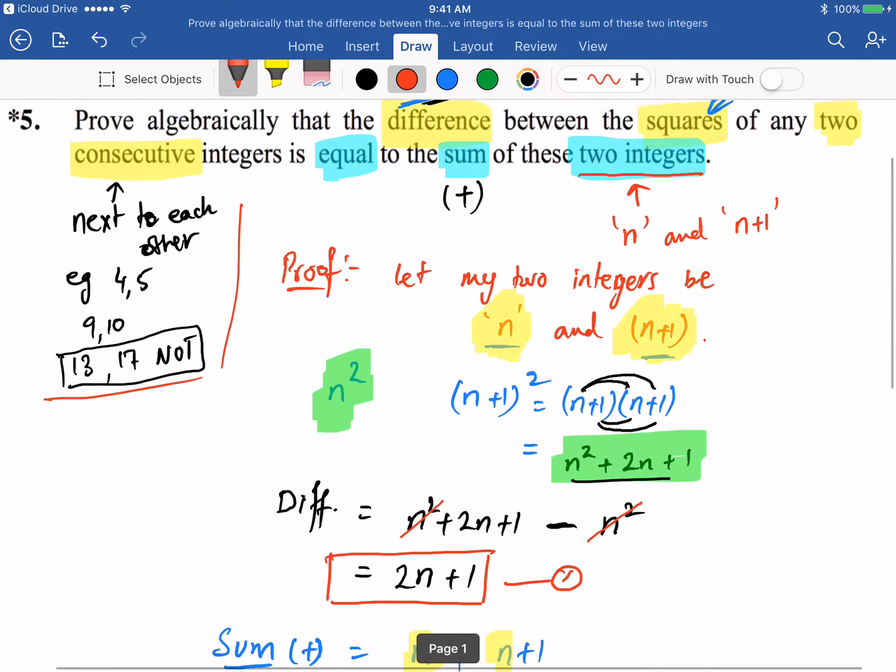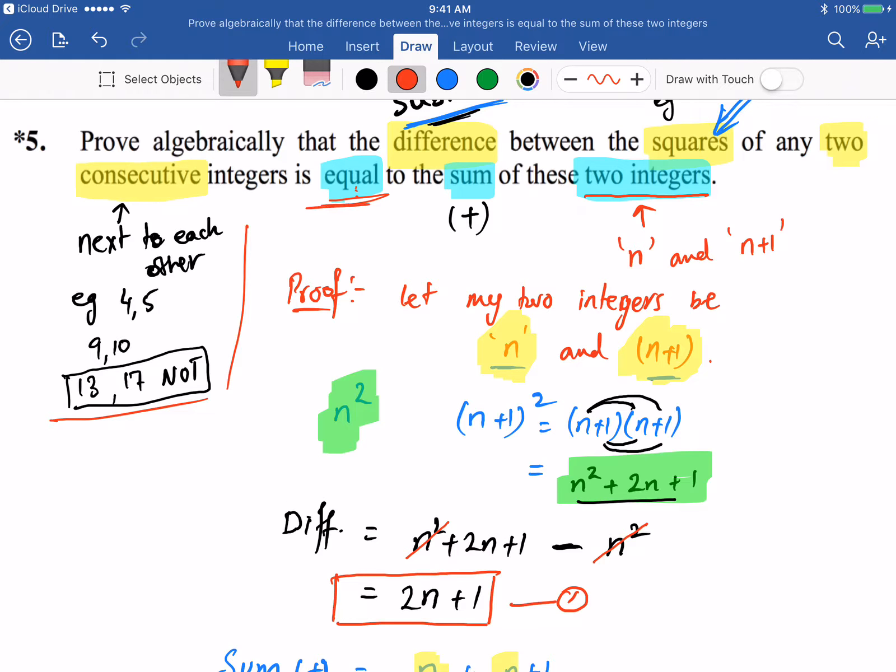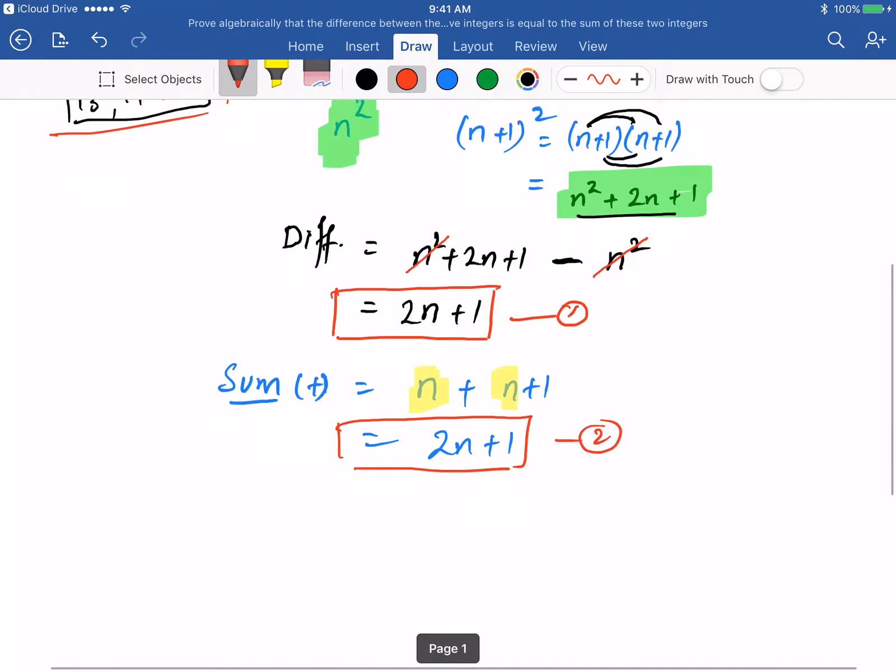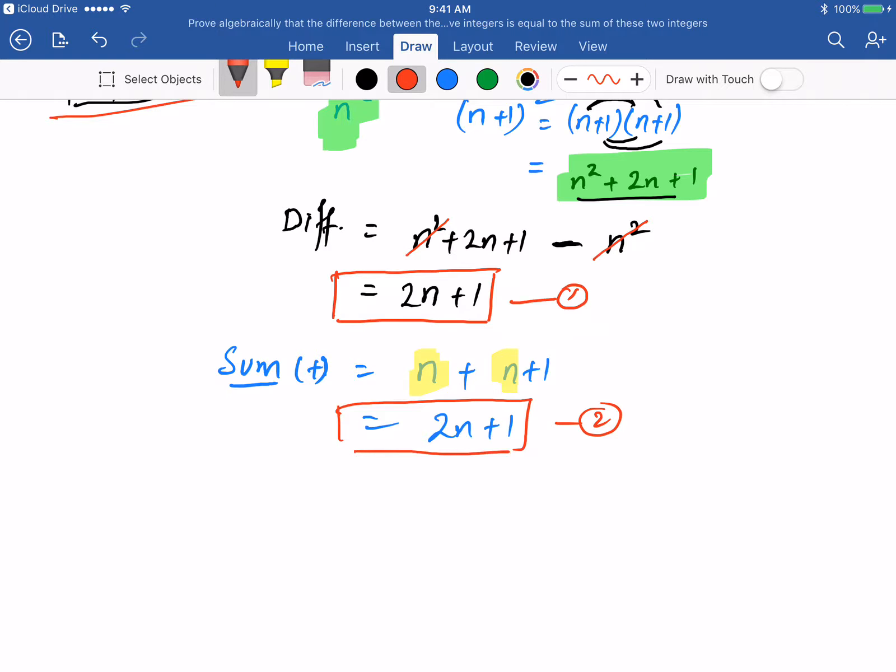And we have to prove that the sum is equal. So you can see clearly from one and two, you can conclude now from equation one and two, we can say two n plus one is equal to two n plus one. Hence proved. And that finishes our proof.